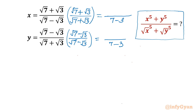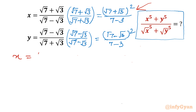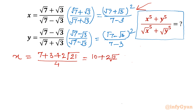Now come to the numerator. For x I will write (√7 + √3)², which expands as a² + b² + 2ab, giving 7 + 3 + 2√21 = 10 + 2√21, divided by 4, which simplifies to (5 + √21) / 2.